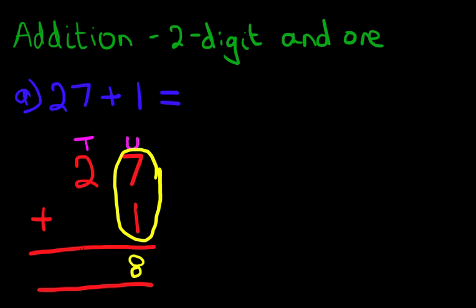We now add the tens column. What is 2 plus... there's nothing here, so it is 0. 2 plus 0 is 2. And that is our answer. 27 plus 1 is 28.